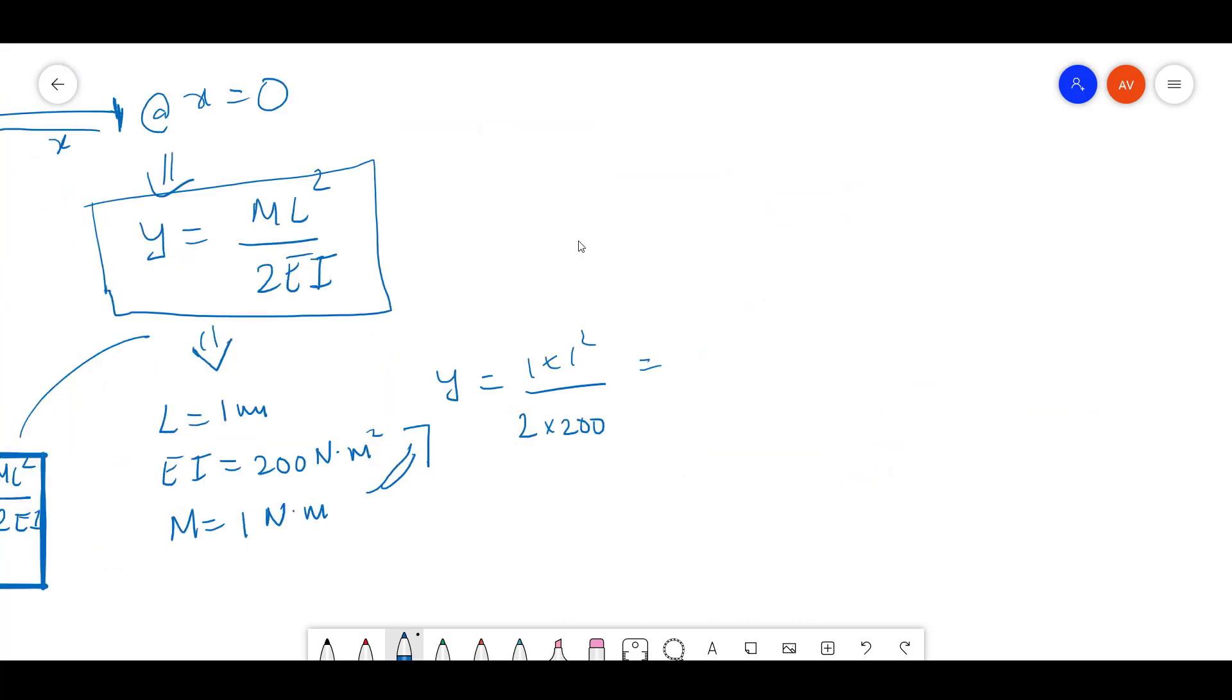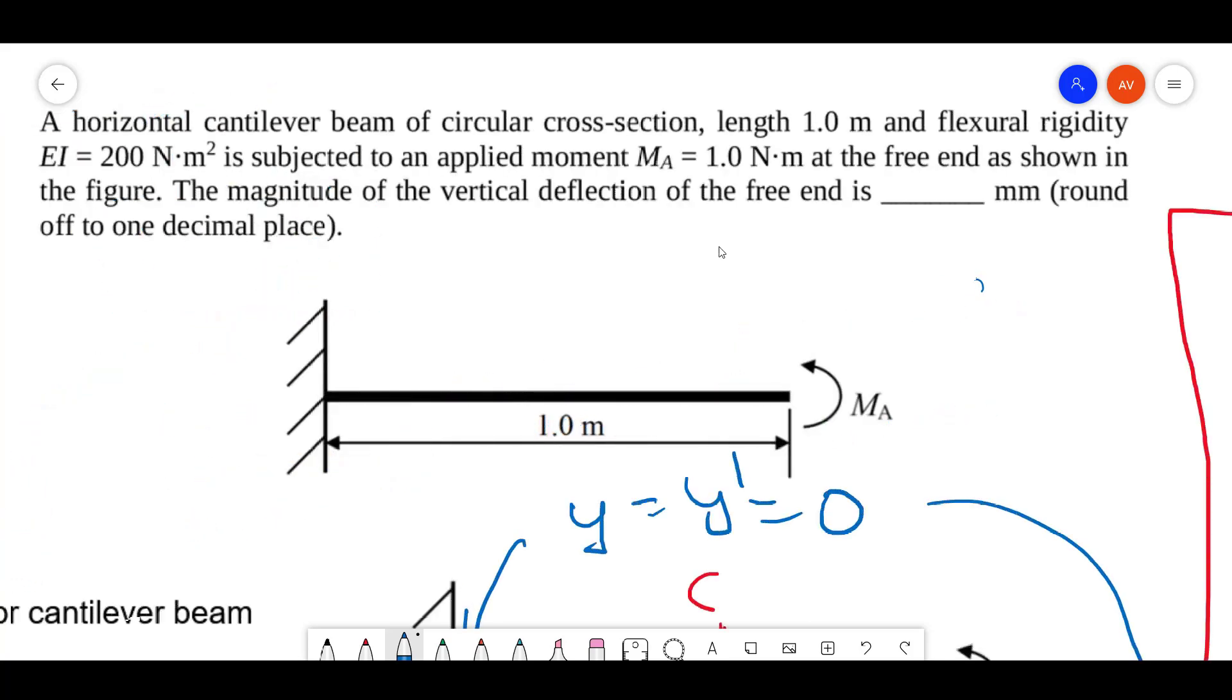You will get 2.5 times 10 to the minus 3 meters, which equals 2.5 mm.